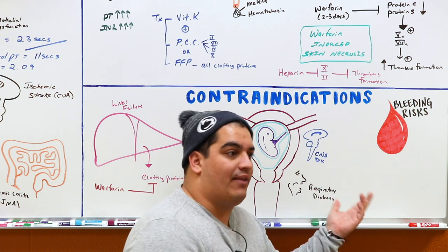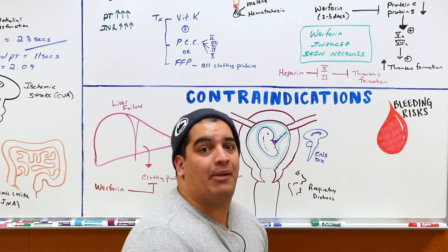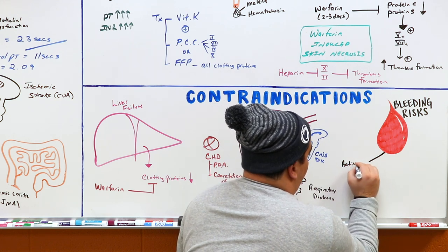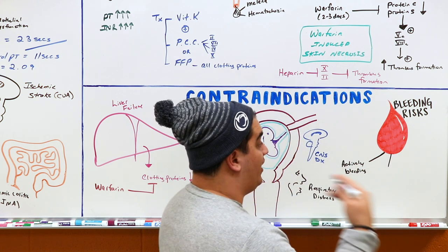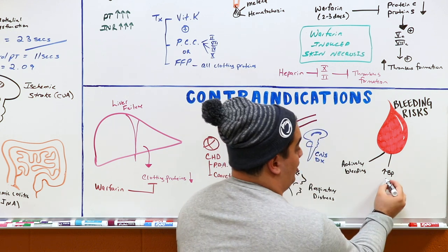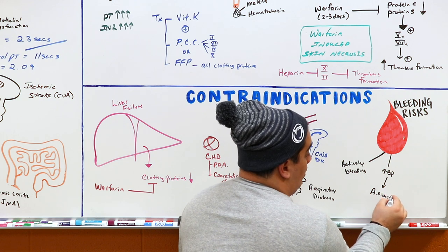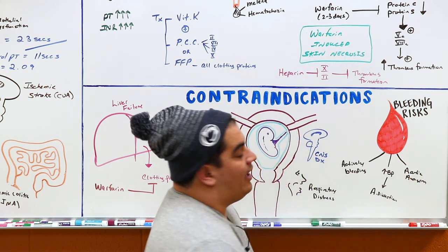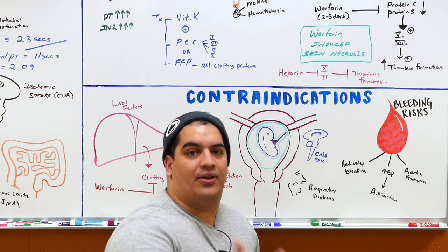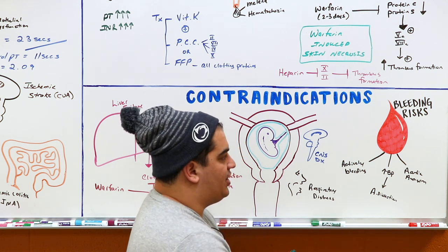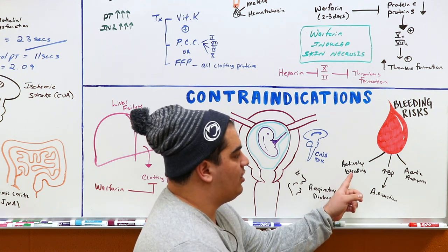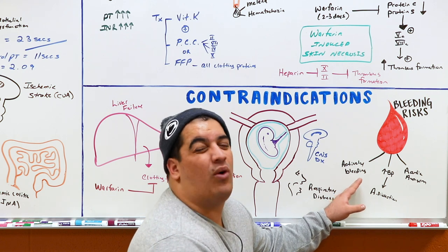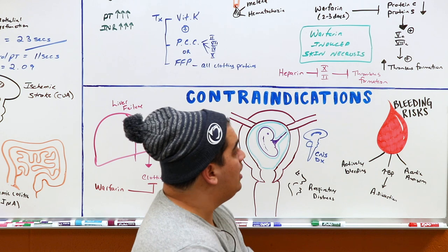Last contraindication: bleeding risks. Don't give warfarin to someone actively bleeding. If they have uncontrollable hypertension, that can lead to aortic dissection. An aortic aneurysm greater than 5.5 cm could rupture if given an anticoagulant. Consider whether anything increases their risk of bleeding, and whether the risk outweighs the benefit. In these situations it's better to err on the side of caution and find another medication. That covers everything we need to know about warfarin.